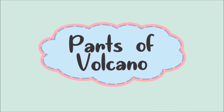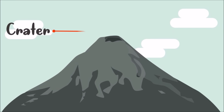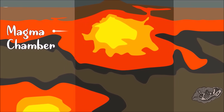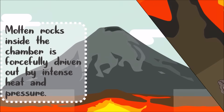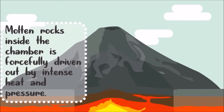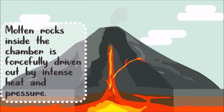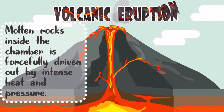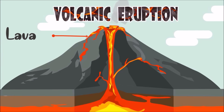Now, let us describe the different parts of a volcano. The opening of a volcano is called the crater, and deeply under it is the magma chamber. Molten rocks inside this chamber are forcefully driven out by intense heat and pressure. When magma is released from the crater, it is called a volcanic eruption. The magma that flows out on the surface is called lava.